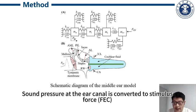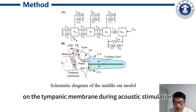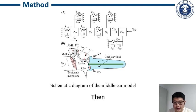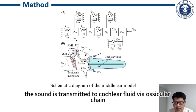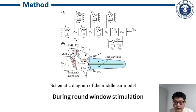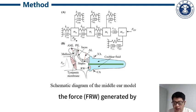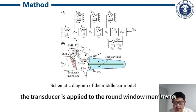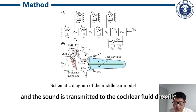Sound pressure at the eardrum is converted to a stimulated force on the tympanic membrane during acoustic stimulation. Then the sound is transmitted to the cochlear fluid via the ossicular chain. During round window stimulation, the force generated by the transducer applies to the round window membrane, and the sound is transmitted to the cochlear fluid directly.